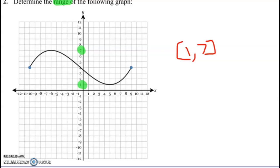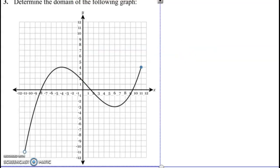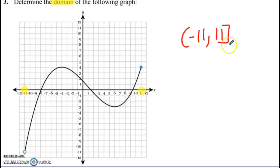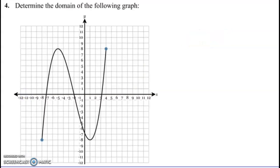Let's look at a few more. This one is determining the domain, so we'll go to the farthest to the left, which is negative 11, to the farthest to the right, which is positive 11. We put the first one in parentheses and the second one in a bracket.